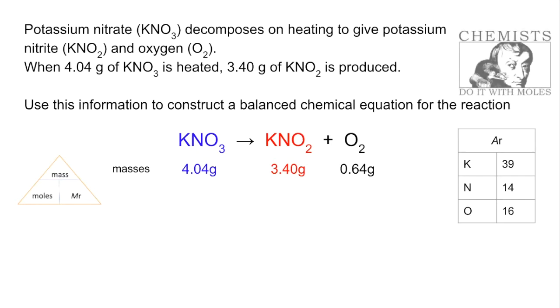The next thing, because chemists work in moles, we're going to calculate the moles of those chemicals. It's all about the moles. So that's mass over MR - 4.04 divided by 101, 3.40 divided by 85, and 0.64 divided by 32. So you can see now that this many moles of potassium nitrate is reacting and producing that many moles of nitrite and that many moles of oxygen.